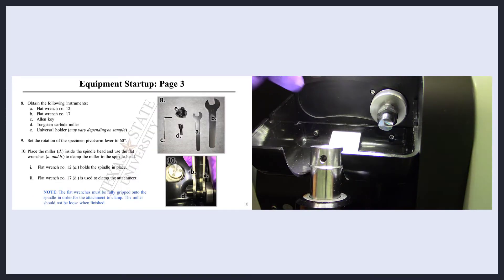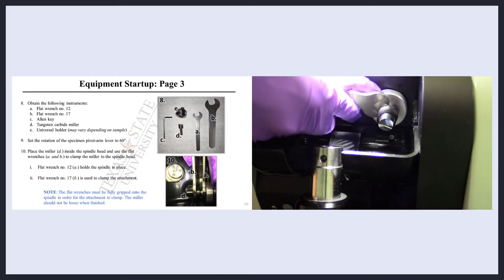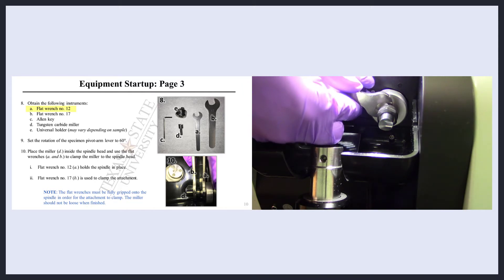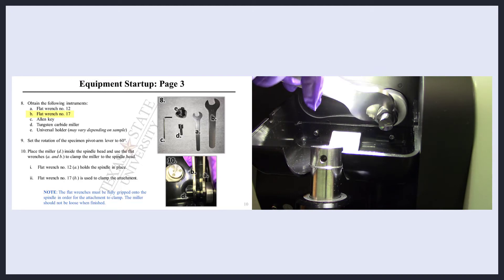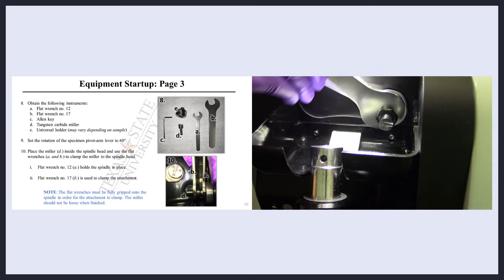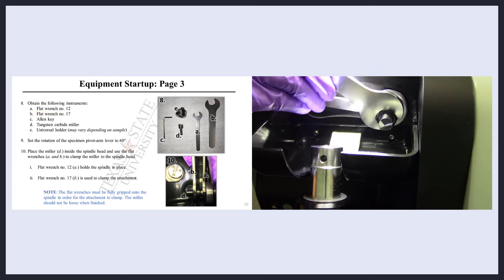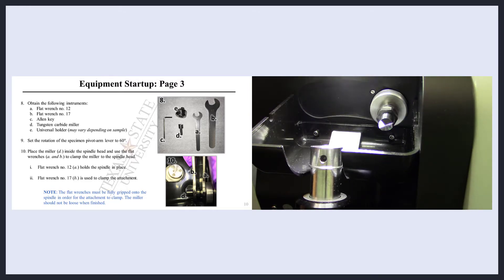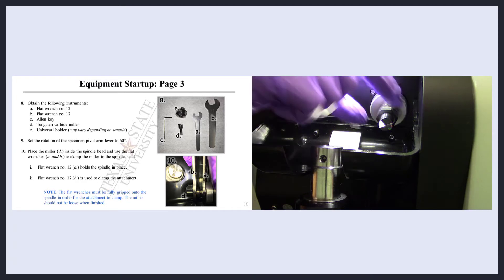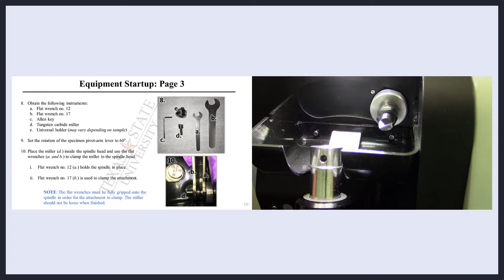Place the miller inside the spindle head and use the small flat wrench number 12 to hold the spindle in place. Then use the bigger flat wrench, number 17, to clamp the miller in place. Be sure to gently pull on the miller to ensure that the miller is fully clamped into the spindle head.